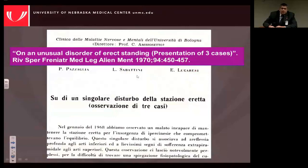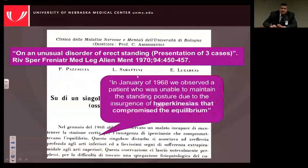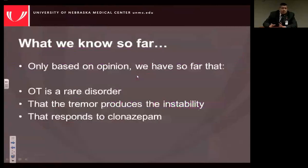This discovery was made in 1970. They wrote: 'In January of 1968, we observed a patient who was unable to maintain the standing posture due to the insurgence of hyperkinesias that compromise the equilibrium.' So what do we know from these experts who first described the disease? Based on opinion alone, we know it is a rare disorder, the tremor might be producing the instability — as the Italians said — and it seems to respond to clonazepam.